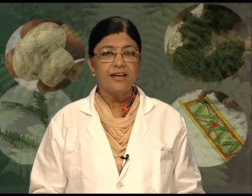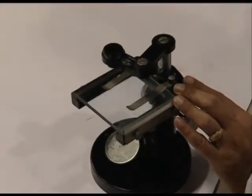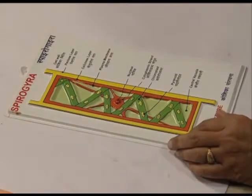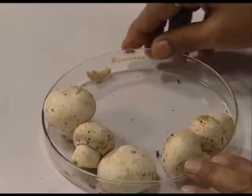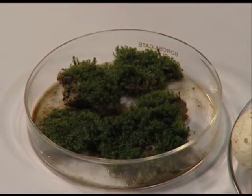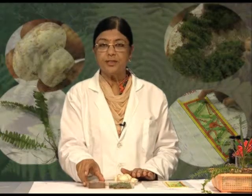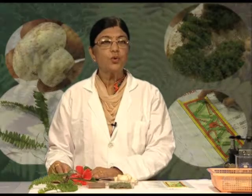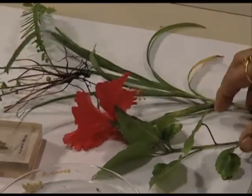Today we will learn about the characteristics of these organisms one by one. For doing this we require some materials: a dissection microscope or magnifying glass, and fresh or preserved specimens of Spirogyra, mushrooms or Agaricus, mosses, some blocks of preserved specimens of mosses, ferns, Pinus needle, cone, as well as some angiospermic plants.